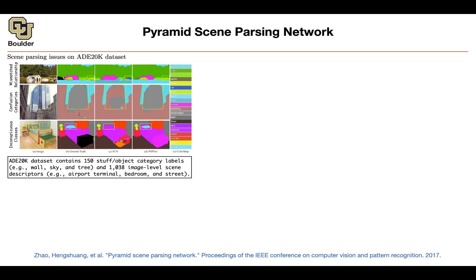Why is the network making this mistake — classifying a boat as a car? A student suggests: maybe the boat requires information from elsewhere in the image. You would know it's a boat because there's water in the scene, and if the network isn't incorporating that knowledge, it won't understand its significance as a boat versus a car. The professor confirms: yes, perfect — the context of the image matters.